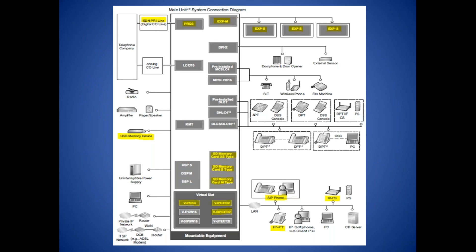The connection page from the NS700 installation manual shows that the system supports features and connection points that aren't supported on the TDA50. The NS700G supports ISDN PRI, USB memory backup and load, IP proprietary telephones, SIP phones, IP cell stations, an in-skin voicemail with three different storage options, up to 24 ports of unified messaging channels, and also up to three expansion cabinets.